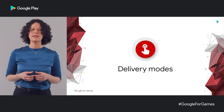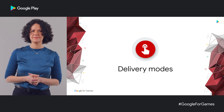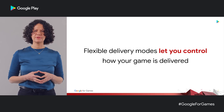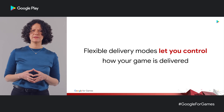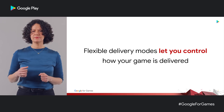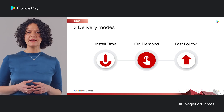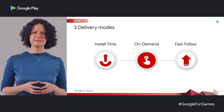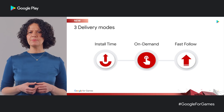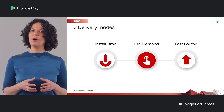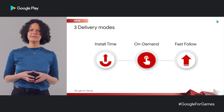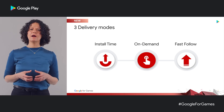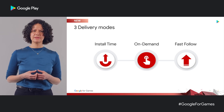Now that we saw how game assets are packaged with Play Asset Delivery, let's see how your assets are actually being delivered. Play Asset Delivery includes flexible delivery modes, which puts you in control of how your game is being delivered, as it's you who know your game and users best. With Play Asset Delivery, you can choose when to have your asset packs delivered: either as part of the initial install, on demand throughout the game lifecycle, or shortly after game installation. Let's dive into the different delivery options and see how our early adopters have been using them so far.